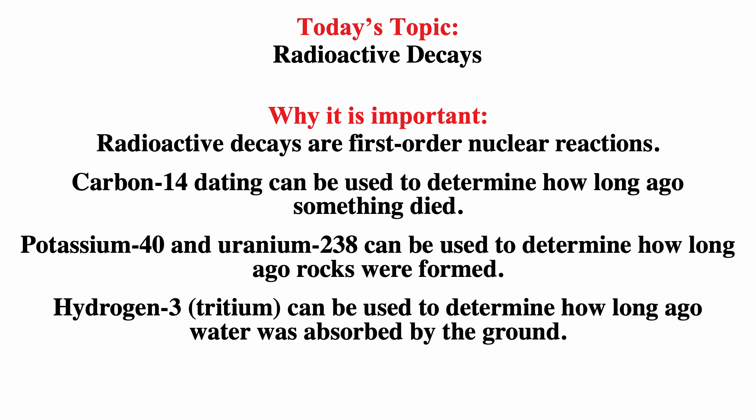Howdy. This video is on radioactive decays. Radioactive decays are first-order nuclear reactions. Some radioactive decays are actually used for radioactive dating. For example, carbon-14 dating can be used to determine how long ago something died. Potassium-40 and uranium-238 dating can be used to determine how long ago rocks were formed. Hydrogen-3, which is tritium, can be used to determine how long ago water was absorbed by the ground.